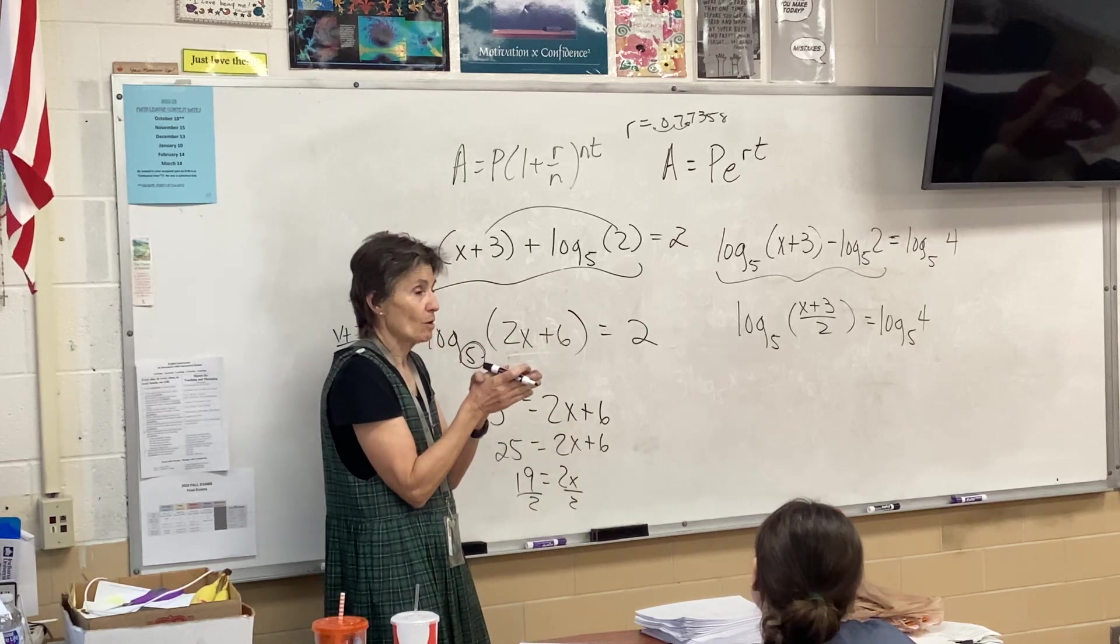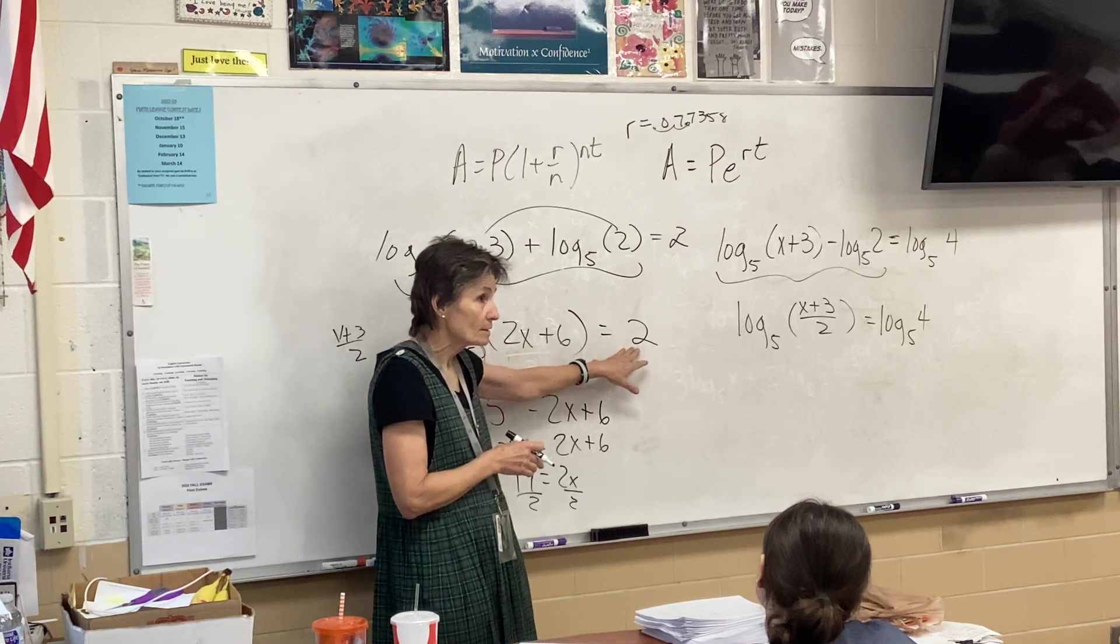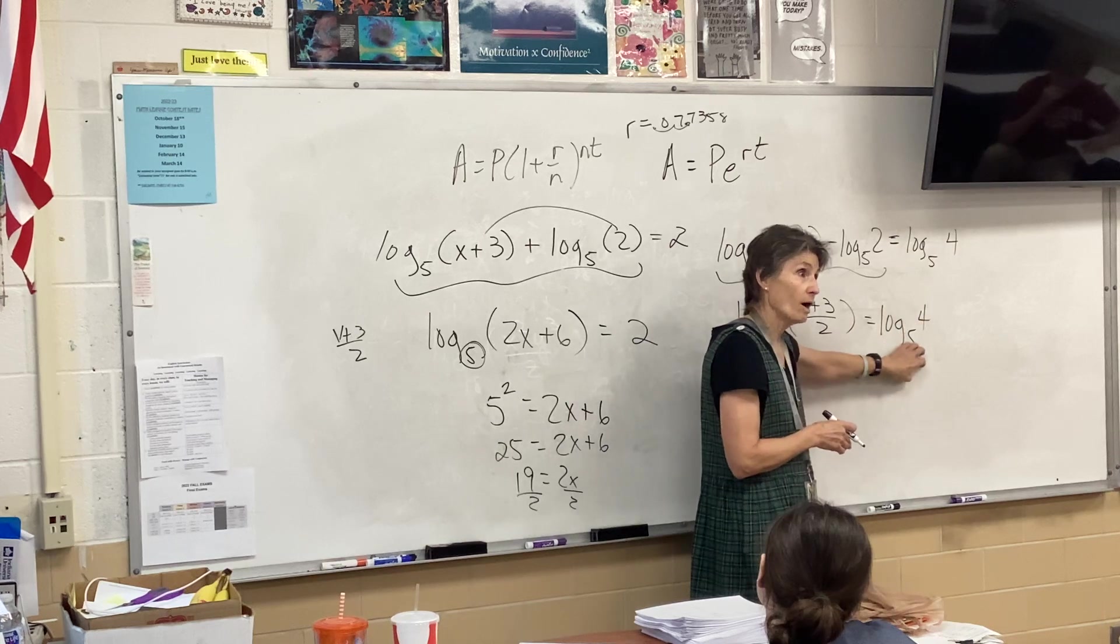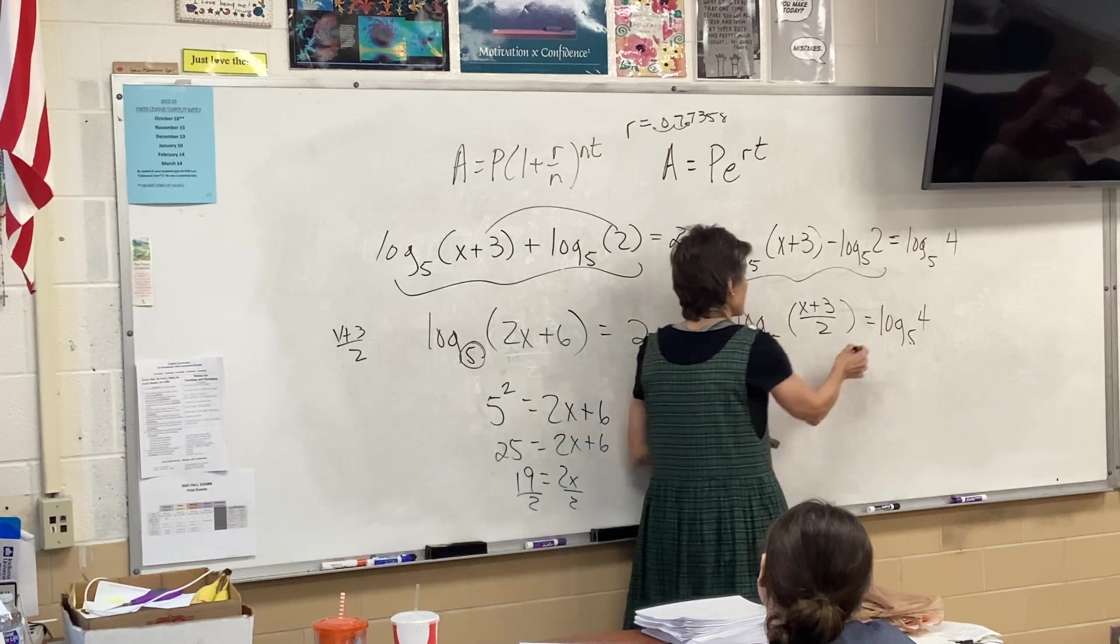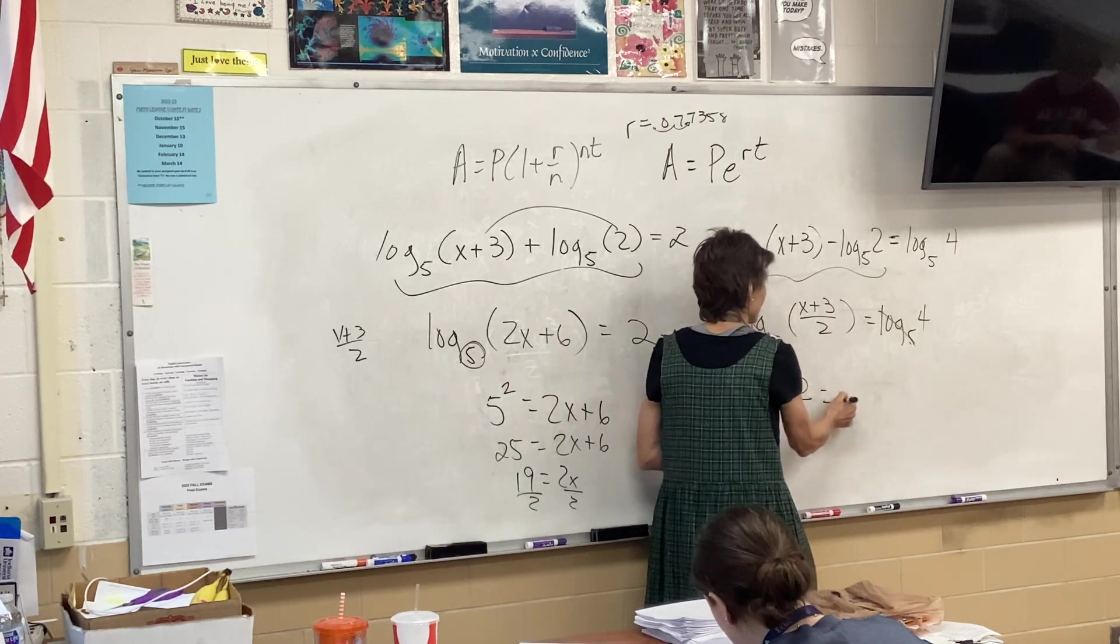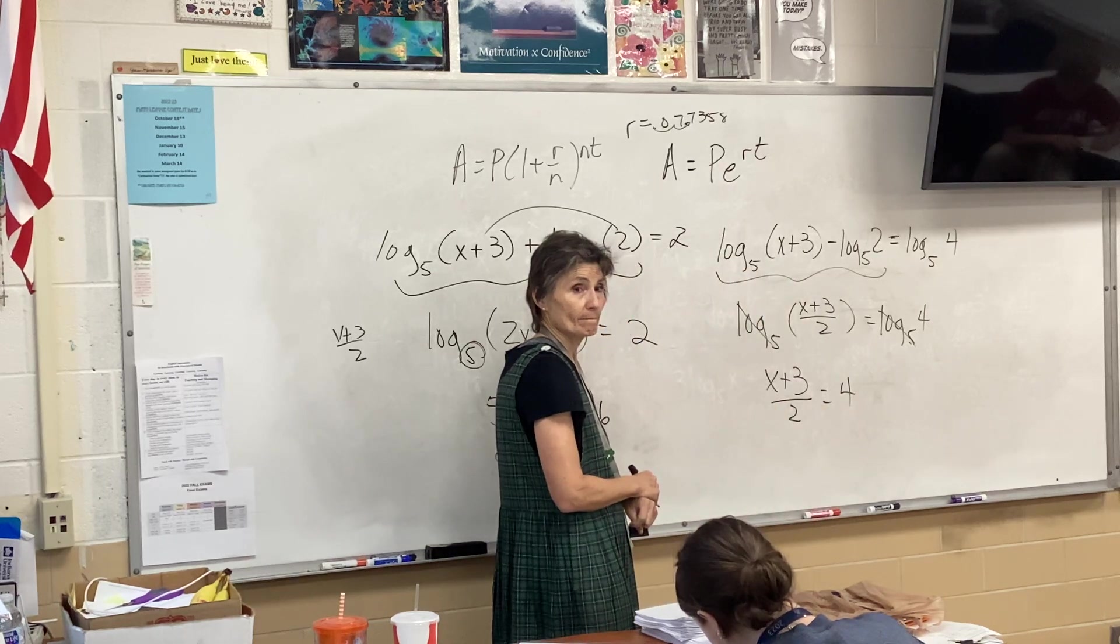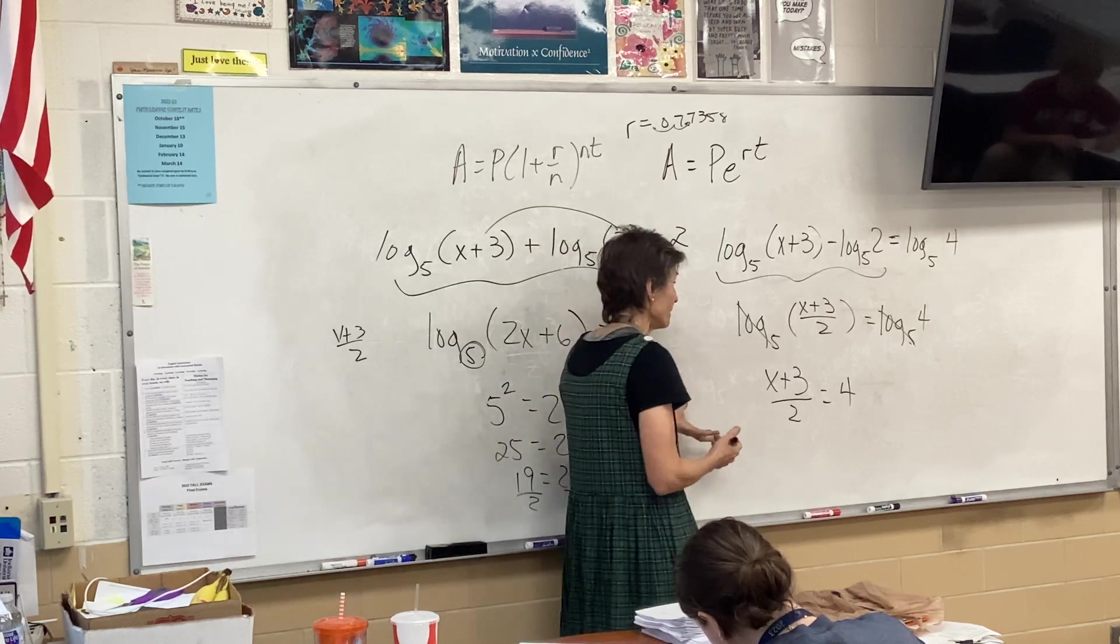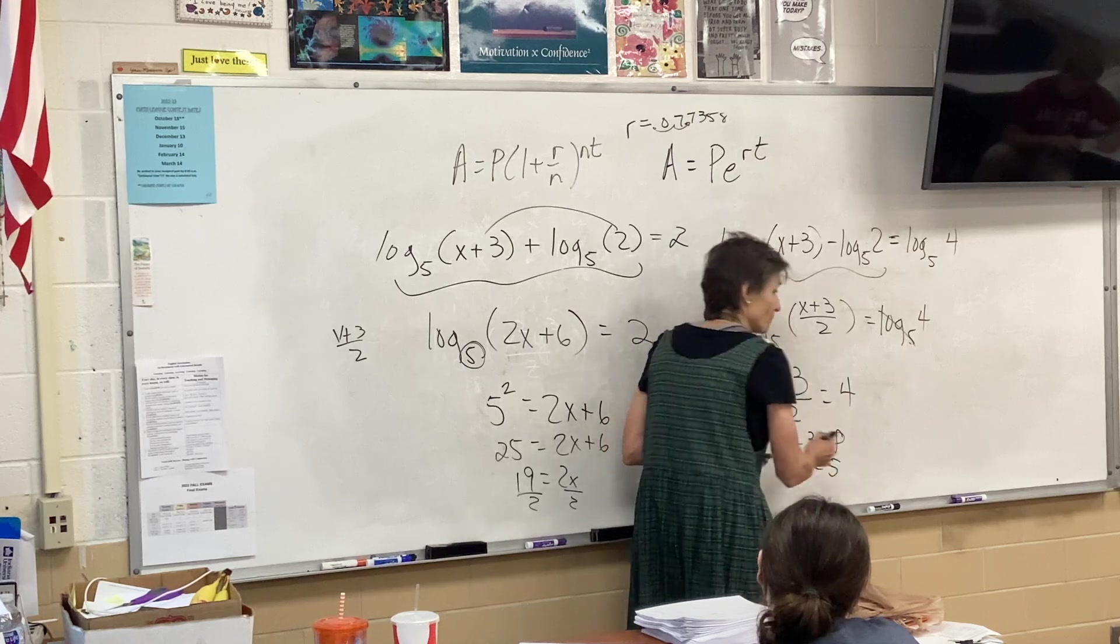Same thing as over here. I'm putting them together. Now, it's different, though, because this one was log equals number. This one is log equals log. So what do I do here? I do not loop-de-do. I drop the logs. So x plus 3 over 2 equals 4. And then I solve like regular. So multiply by, so x plus 3 equals 8 and x equals 5.